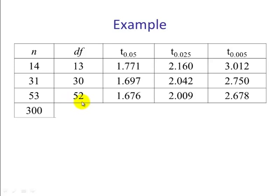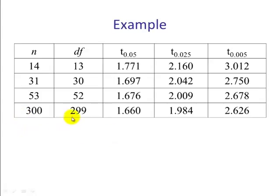For 53, we have a degree of freedom of 52 and we have our corresponding values. If we go to 300, degrees of freedom is 299, and we have our corresponding t values. If you see, the larger n gets, the more the t approaches the z. If we were to look at this for a z, this would be 1.645. For a 95%, this would be 1.96, and for a 99%, this would be 2.576.